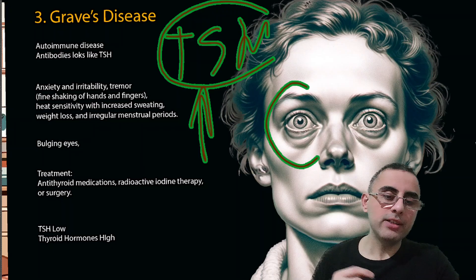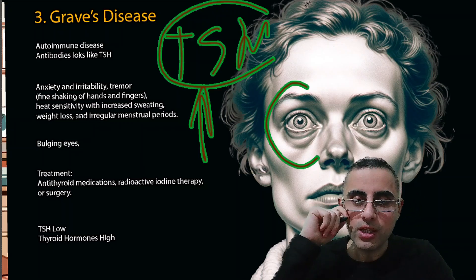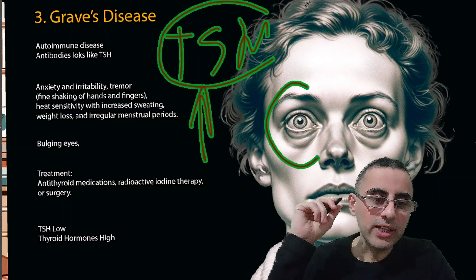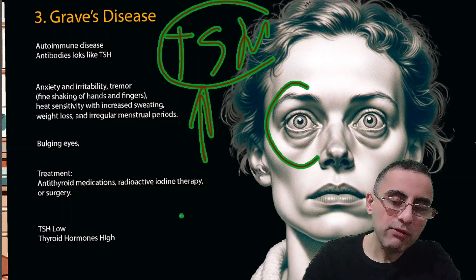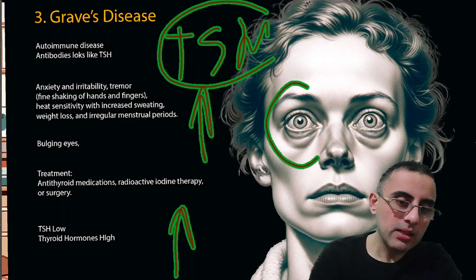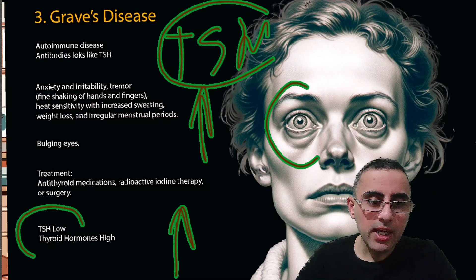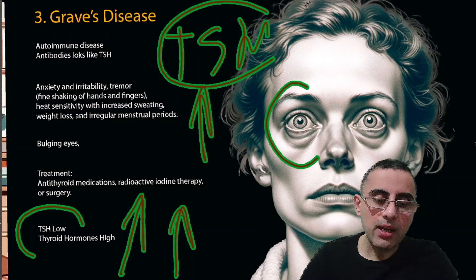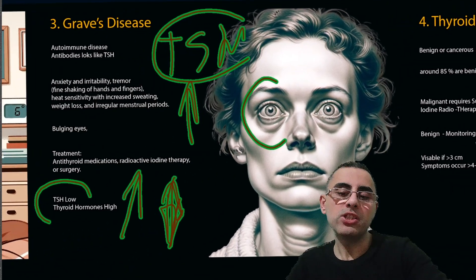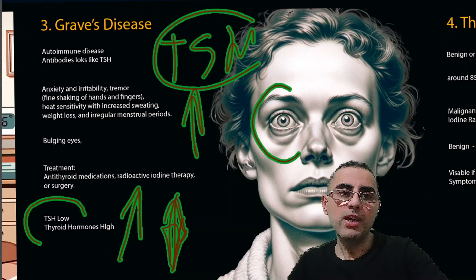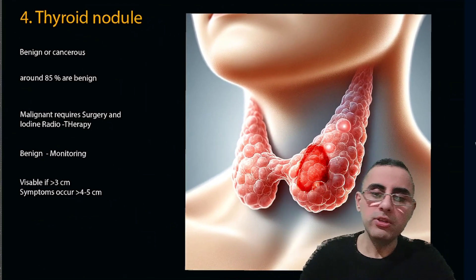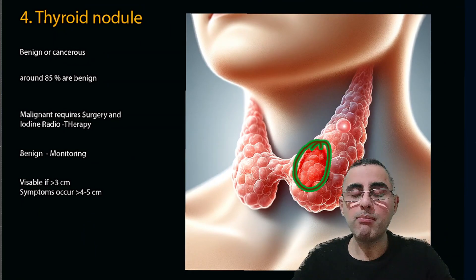Treatment for Graves' disease includes anti-thyroid medications, radioactive iodine therapy to destroy part of the thyroid tissue, and surgery as another option. In laboratory findings, TSH is low because there is already a large amount of thyroid hormone, so the body tries to stimulate less. We have low TSH and high thyroxine — that is the laboratory picture of Graves' disease.